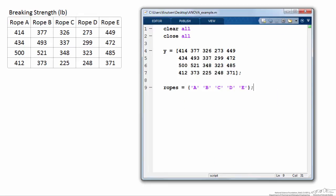So to begin doing this analysis in MATLAB, I've written a script in which I first clear all the variables and close any open plots, and then I make a matrix called Y, where each column of the matrix represents the four measurements conducted on each of the five ropes.